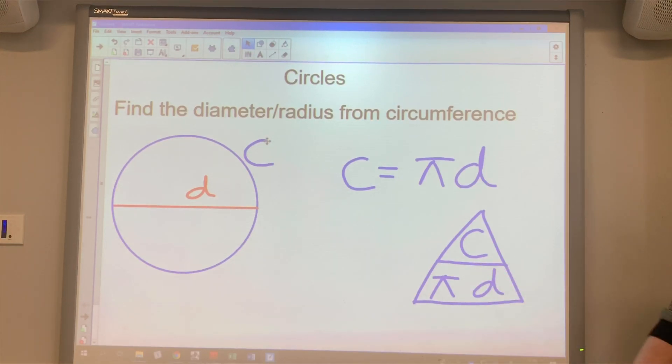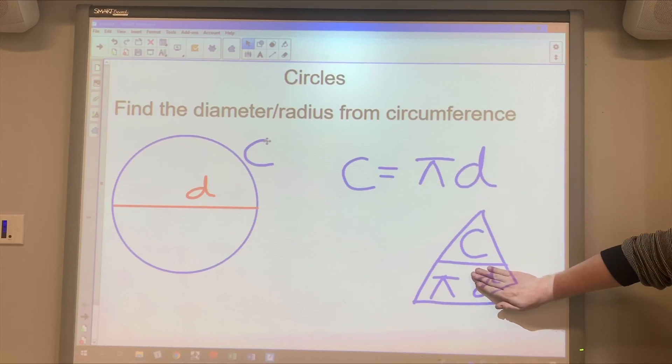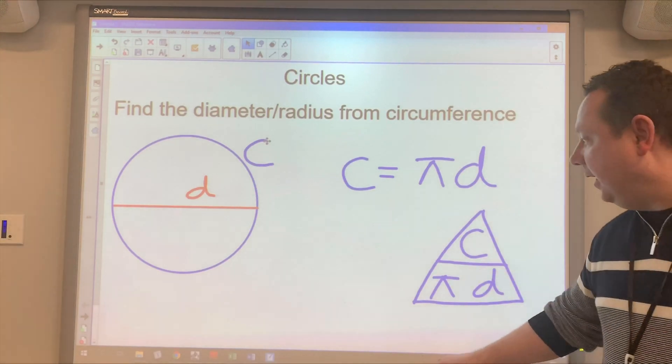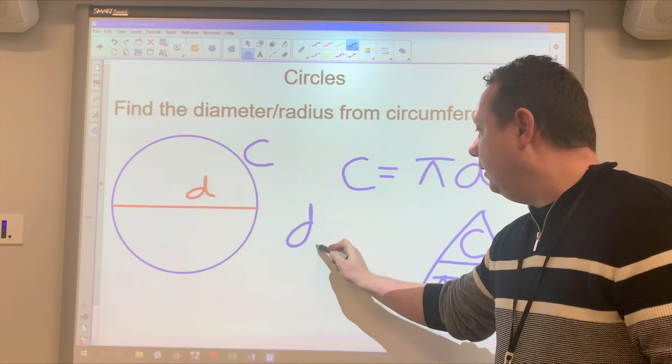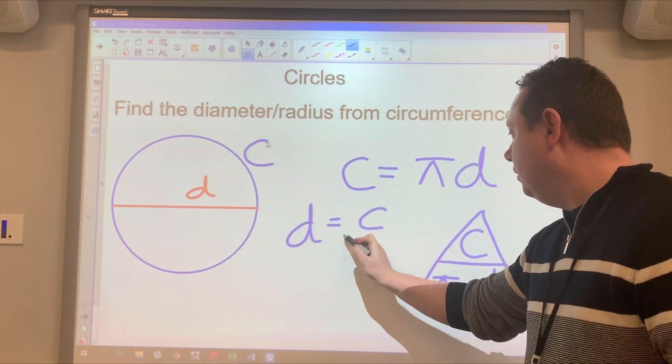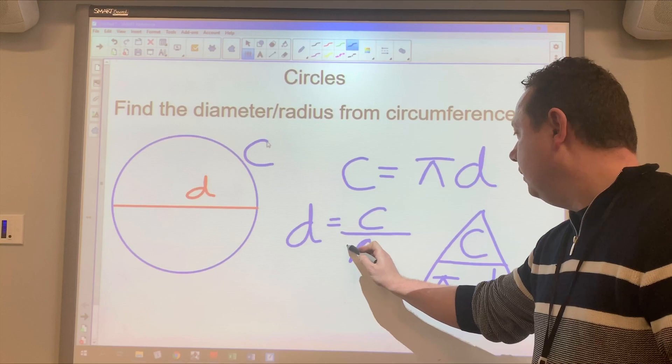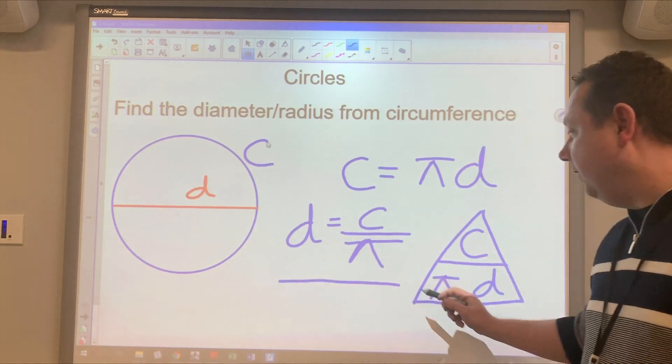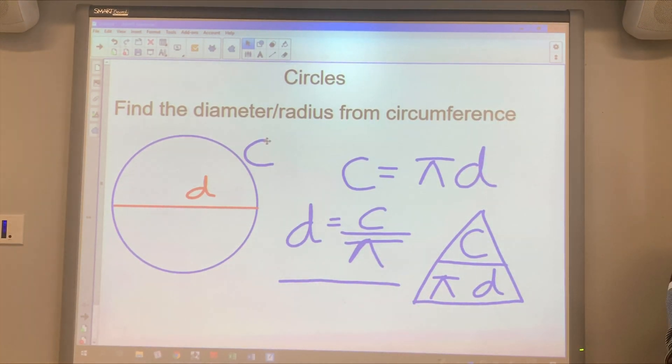I'll do that again. If I cover D up, it says C over pi. So I write D equals C over pi. So to find the diameter, I take the circumference and I divide by pi.